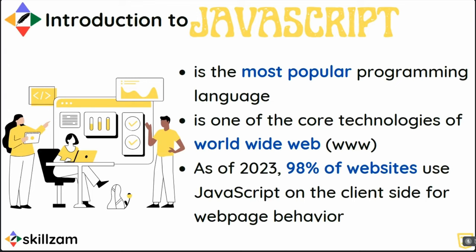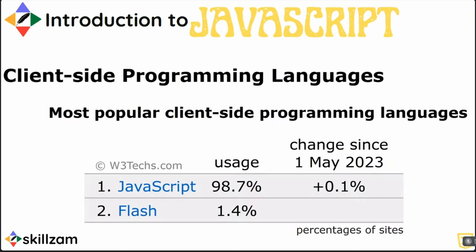In web technologies, there is always a client side and a server side — that is what the request-response cycle or client-server architecture is. According to W3techs.com, they have listed the most popular client-side programming language as JavaScript.